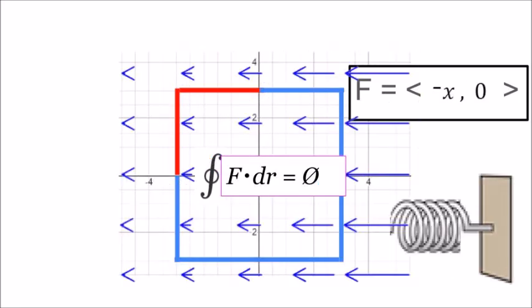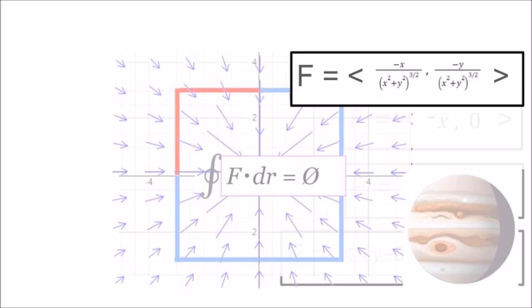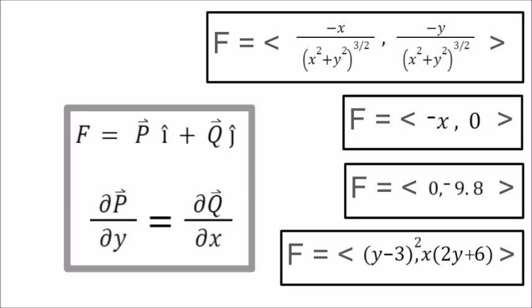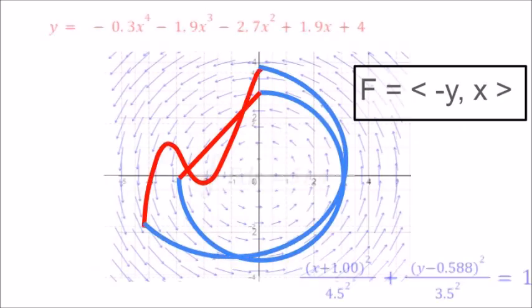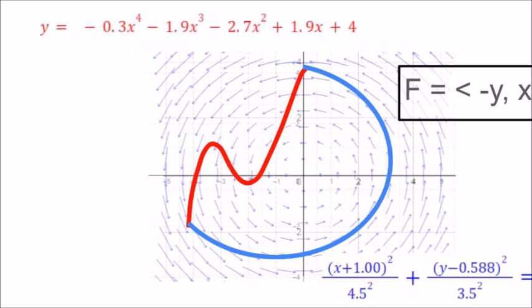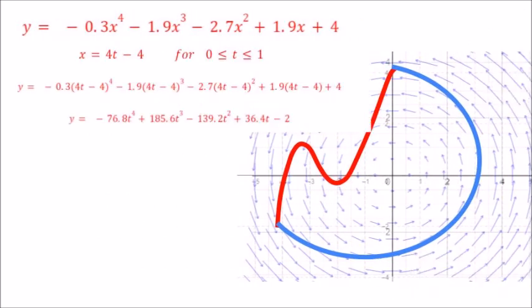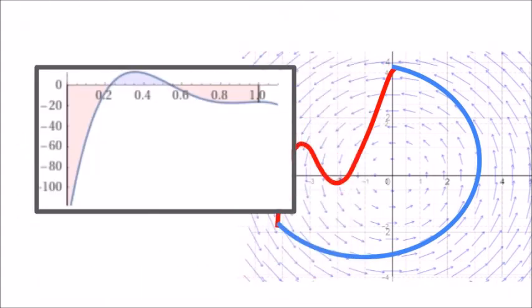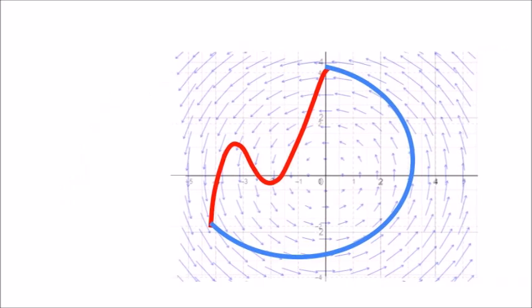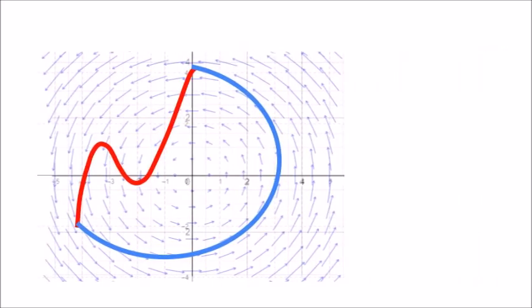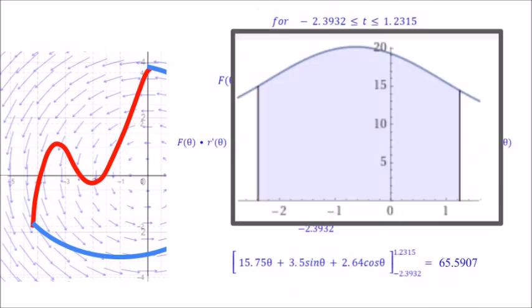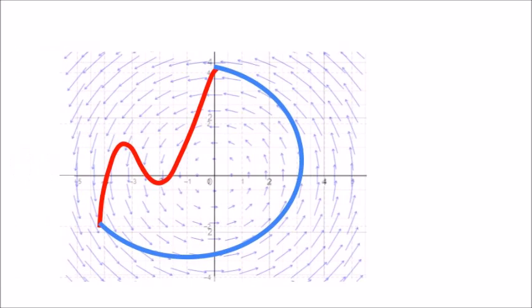Closed path integrals are always zero for conservative functions. So what do these have in common? What makes them conservative? It might not be obvious, but it is an equation. We're not going to prove it — we're just moving on because we have unfinished business. And finally, we have all the tools we'll need.